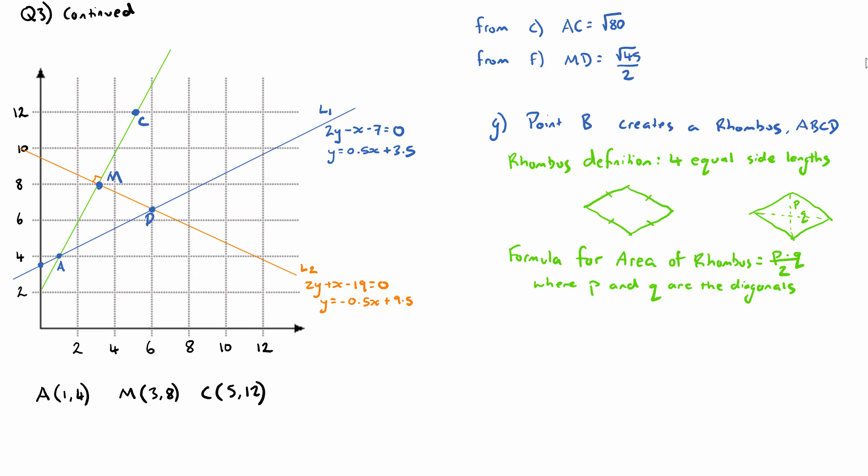Let me recap what a rhombus is. A rhombus is a shape that has four equal side lengths - think of it as a squashed square. The formula for the area of a rhombus is to multiply the two diagonal lengths and divide by 2.